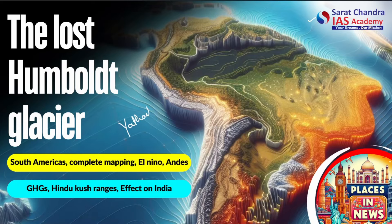In today's video, we will be talking about the lost Humboldt glacier from the country of Venezuela in Southern Americas. We will be completely mapping Southern Americas, then talking about various geographical features such as the Andes mountain ranges, the Hindu Kush ranges, and phenomena such as El Niño and global warming.